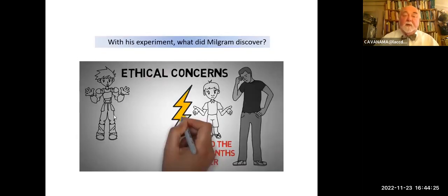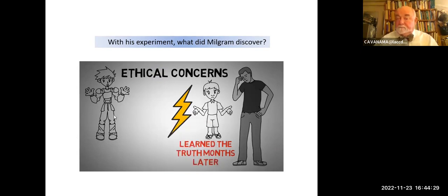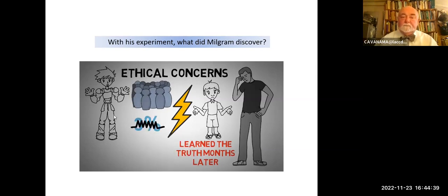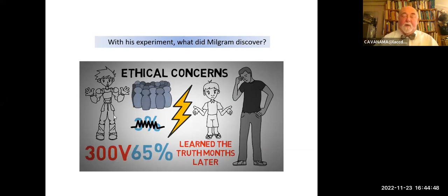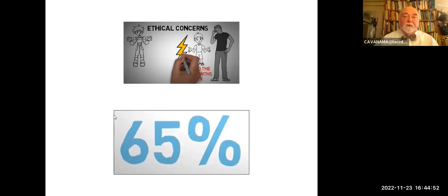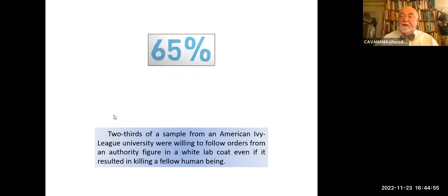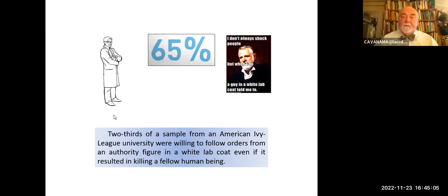What did Milgram discover? After the experiment was over, Milgram asked a group of his students how many participants they thought would deliver the highest shock, and the students predicted 3%. But in the most well-known variation of the study, a shocking 65% of participants reached the highest level of the shocks, and every single participant reached 300-volt levels. Wow — 65%. Two-thirds. Two-thirds of a sample from an American Ivy League university were willing to follow orders of an authority figure in a white lab coat, even if, as far as they knew, it resulted in killing a fellow human being. 'I don't always shock people, but when I do, a guy in a white lab coat told me to do it.'